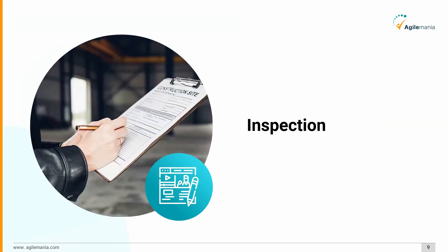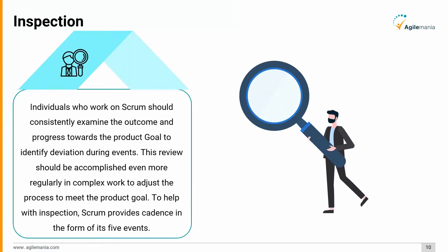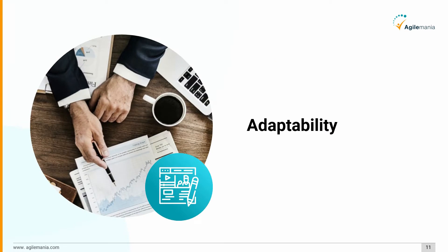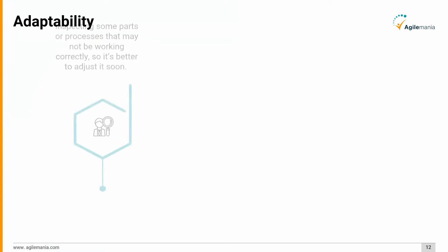Second, inspection: individuals who work on Scrum should consistently examine the outcome and progress towards the product goal to identify deviation during events. This review should be accomplished even more regularly in complex work to adjust the process to meet the product goal. To help with inspection, Scrum provides cadence in the form of its five events.